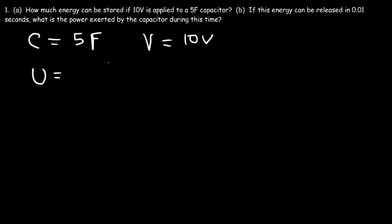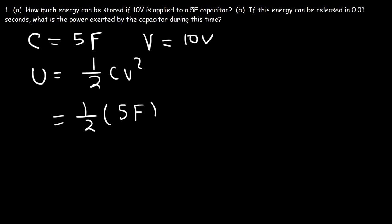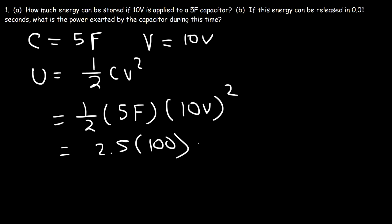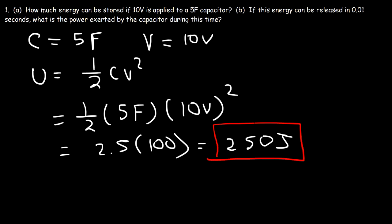The formula we need is one-half CV squared. So it's one-half multiplied by the capacitance of 5 farads and the voltage of 10 volts. Half of 5 is 2.5 and 10 squared is 100, so this is going to be 250 joules of potential energy.